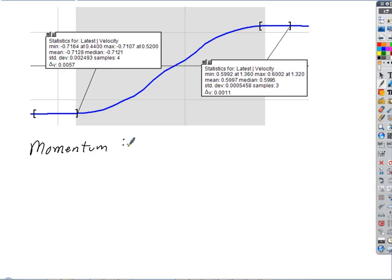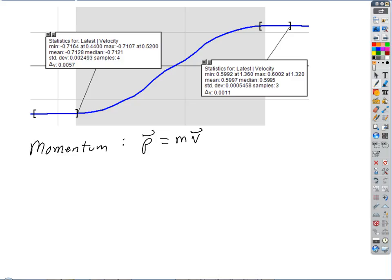Momentum is defined as, we give it lowercase p as the symbol for momentum in physics, and all it is, is m times v. Now those of you who are here, do you remember how is momentum connected to Newton's second law? Because it's moving, it doesn't want to boost that momentum.